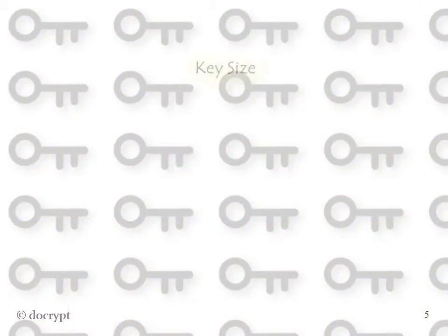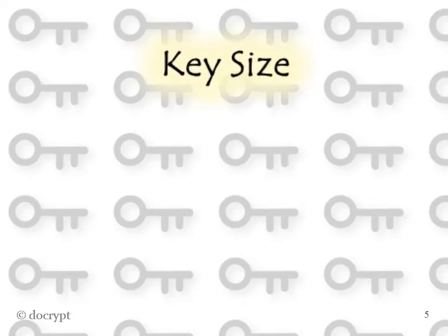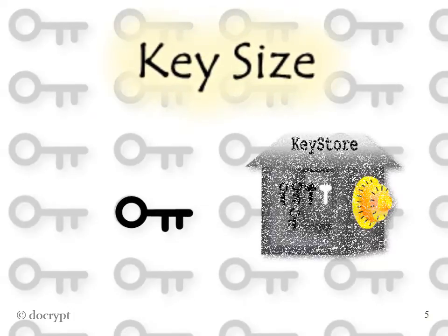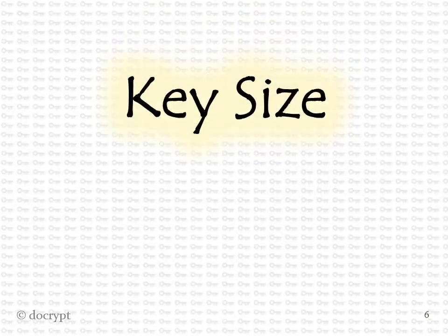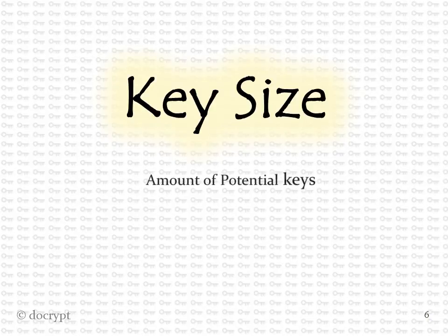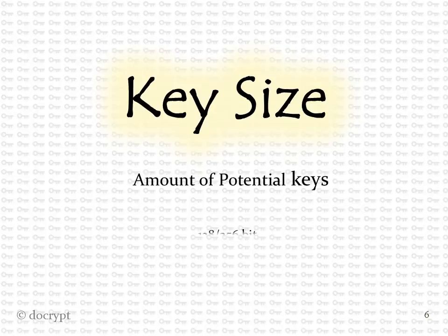The two most important components in encryption are method and key size, and then, of course, protecting your chosen key. We'll show you why key size is really the amount of potential keys that a particular method has. This will be crucial in understanding when to use 128 or 256 bit or another length of key.